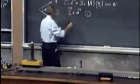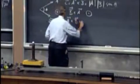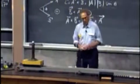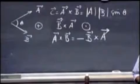In other words, A cross B equals minus B cross A, whereas A dot B is the same as B dot A.